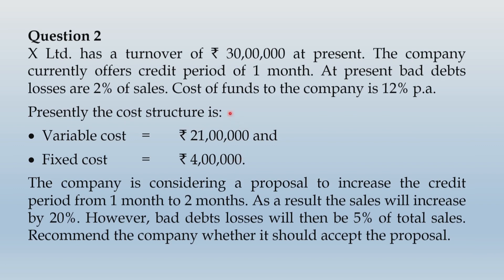Since sales are already on credit, some funds will be blocked, so there will be a cost of funds blocked in both present and proposed policy. Likewise, there will be bad debts in both scenarios. Currently bad debt is 2 percent of sales, that is 2 percent of 30 lakhs. In the proposed policy, bad debt rate increases to 5 percent, applied on 36 lakhs.